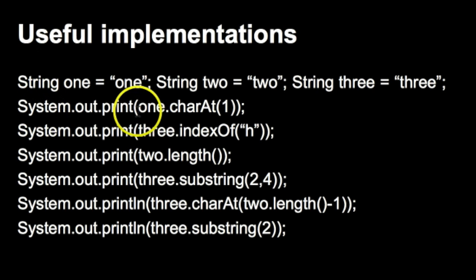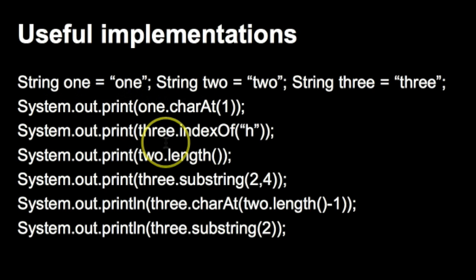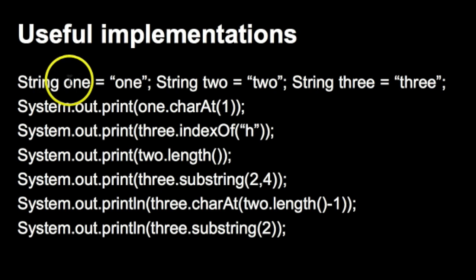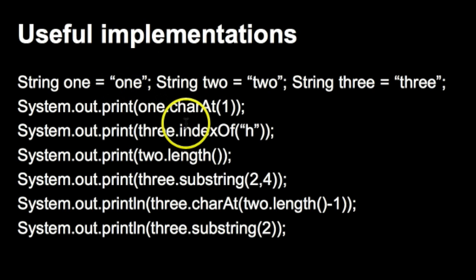Our first print statement says System.out.print one.charAt(1). In Java and many programming languages, elements start at index 0. So if we look at the string 'one', the first element at index 0 is 'o'. If we call charAt(1), that gives us 'n', because 'o' is index 0, 'n' is index 1, and 'e' is index 2. So this would return 'n'.